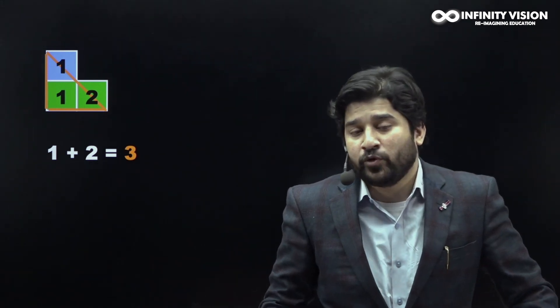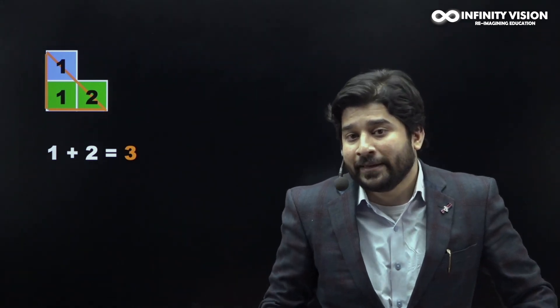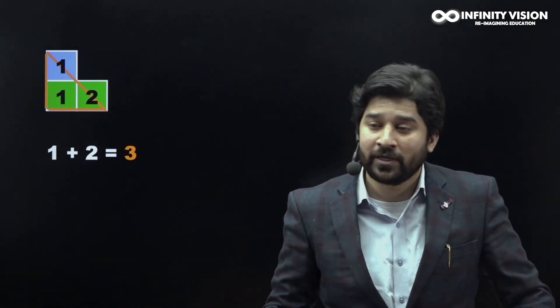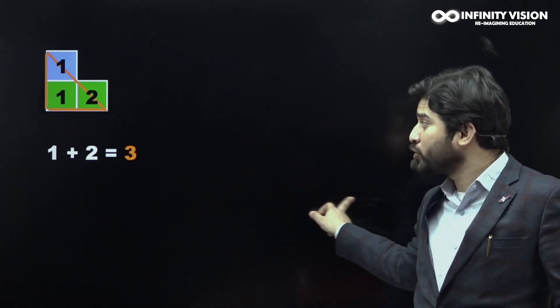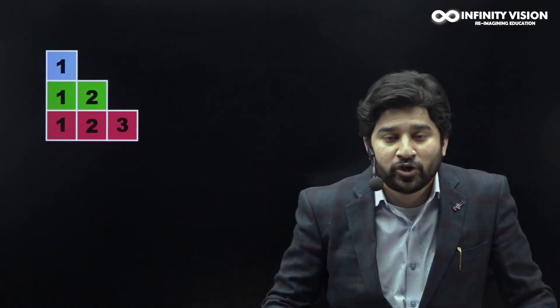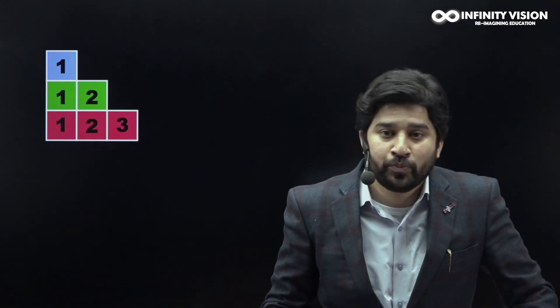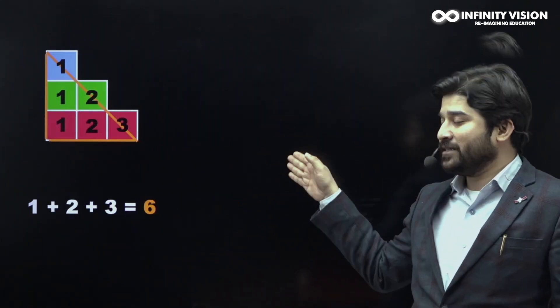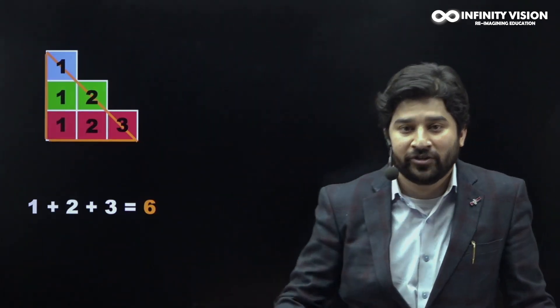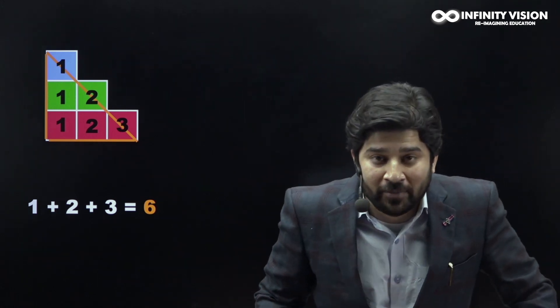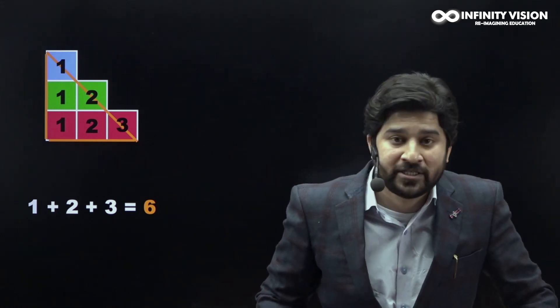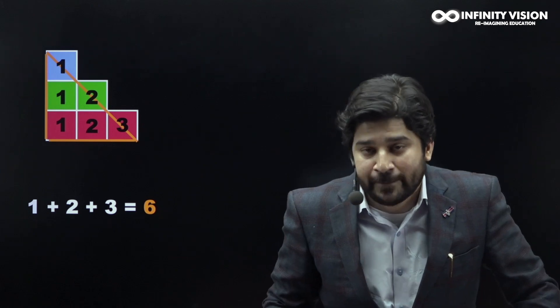Now let's build the third triangular number. I am going to add three more squares to it, something like this. So you have 1 plus 2 plus 3, and again you can see it takes the shape of a triangle. The third triangular number is 1 plus 2 plus 3, which is equal to 6.